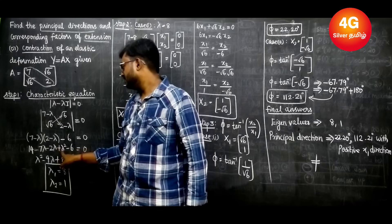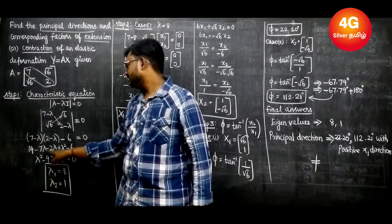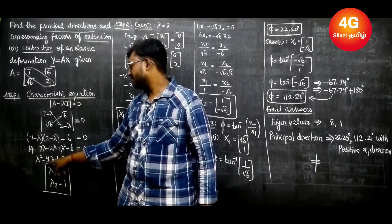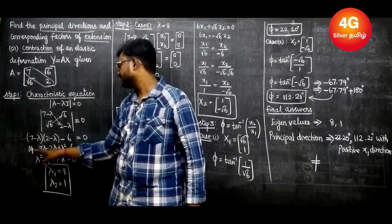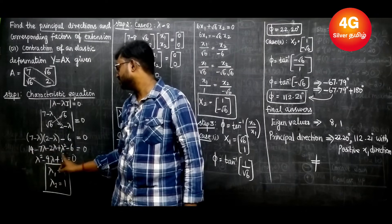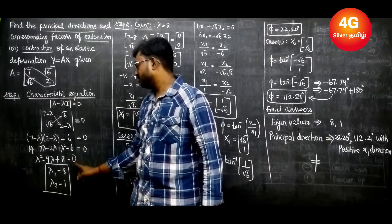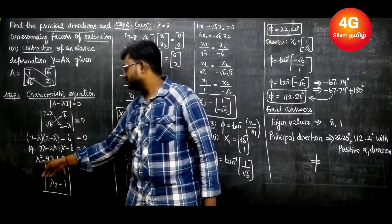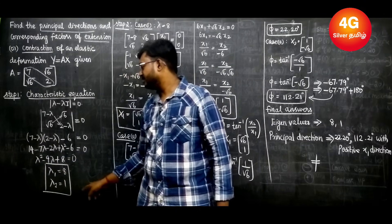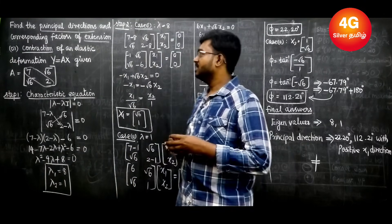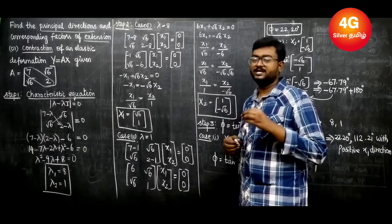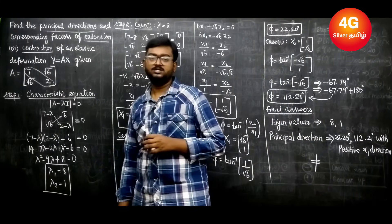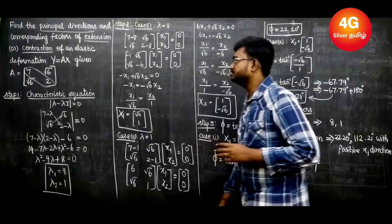Simplifying: λ² − 7λ − 2λ = −9λ, and 14 − 6 = 8. So we get λ² − 9λ + 8 = 0. Factorizing this gives us two λ values: 8 and 1. That completes Step 1 — using the characteristic equation to find the lambda values.